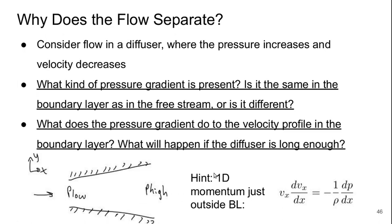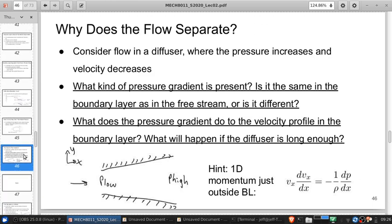So as a hint, think about a one-dimensional form of the momentum equation, which is outside or even inside the boundary layer: the velocity times the gradient of the velocity is equal to negative one over density times the pressure gradient. So take a couple of minutes and think about this and try to figure it out before we move on to the next part of the presentation.